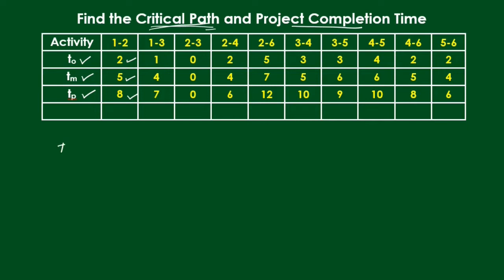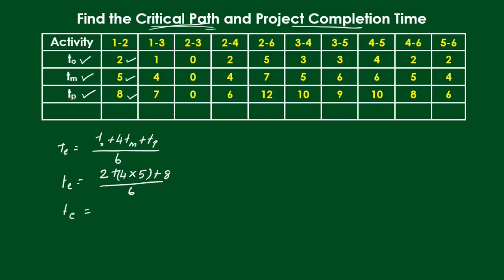Using the formula: estimated time TE = (T0 + 4×Tm + Tp) / 6. For activity 1-2: TE = (2 + 4×5 + 8) / 6 = 30/6 = 5 days. So the estimated completion time of activity 1-2 is 5 days.